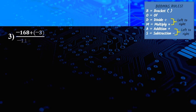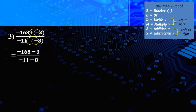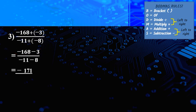Another example: (negative 168 plus negative 3) divided by (negative 11 plus negative 8). Change signs first — plus minus becomes minus in both the numerator and denominator. Solve the top: negative 168 minus 3 — same sign, plus the number — equals negative 171. Solve the bottom: negative 11 minus 8 — same sign — equals negative 19. Then divide: negative 171 divided by negative 19 — same sign is positive — equals 9.